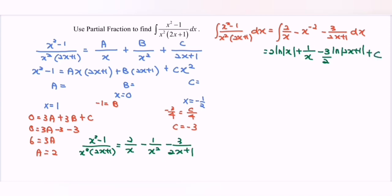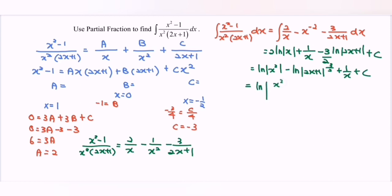So we may rewrite and simplify: 2 ln x minus (3/2) ln of 2x plus 1, plus 1 over x, plus C.